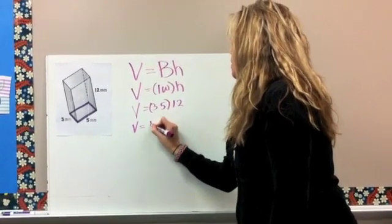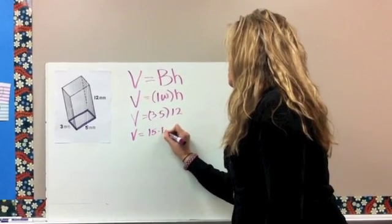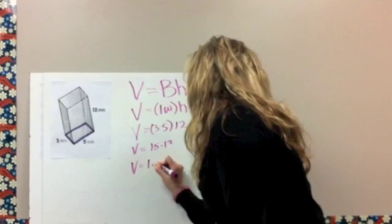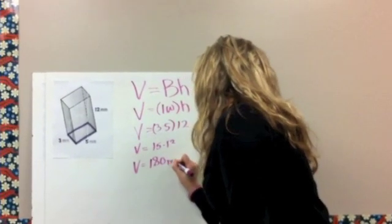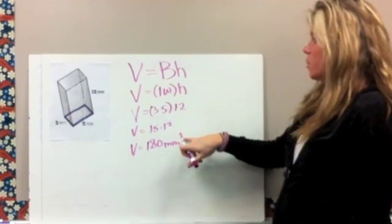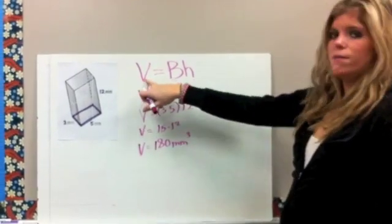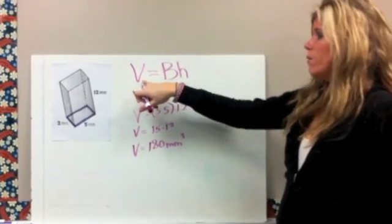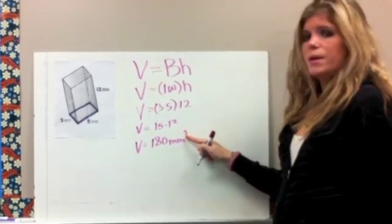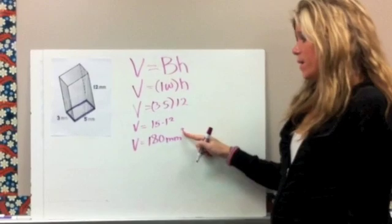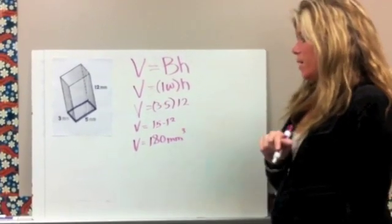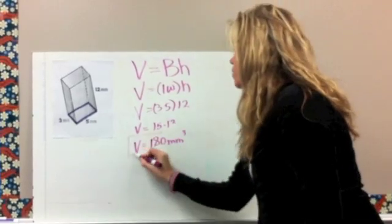Simplify further. Now I have 15 times 12, so 15 times 12 is 180 millimeters cubed. This 3 up here represents that we're doing 3D figures. For surface area, we always put a 2 for square because we were just finding area. Now we're actually finding volume, so make sure you use your cube, or your 3, your exponent of 3 for your units for volume.